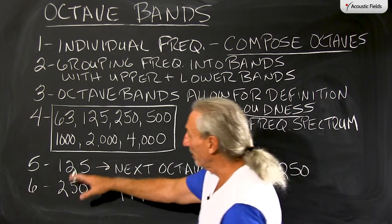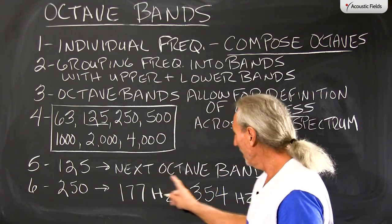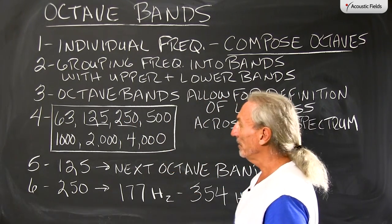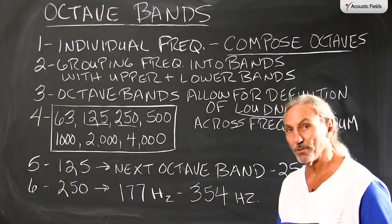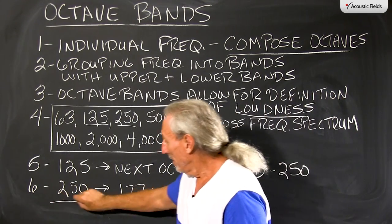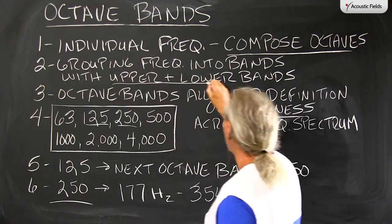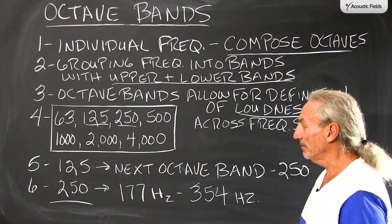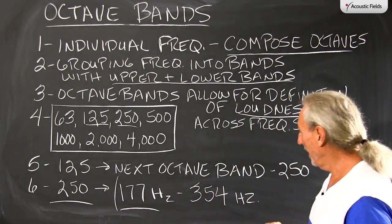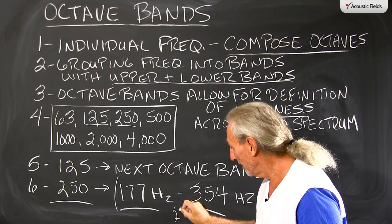If we choose 125 as our octave band, we know that our next octave band is two times that, or 250. Two times 250 is 500, two times 500 is 1000, and so forth — it's a doubling. Now, each octave band has an upper and lower limit. The 250 Hz band has a lower limit of 177 and an upper limit of 354, with 250 right in the middle.